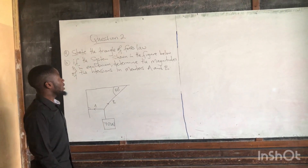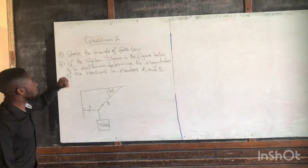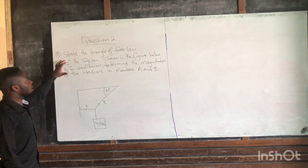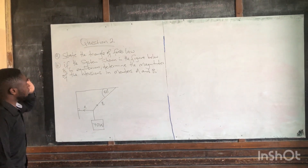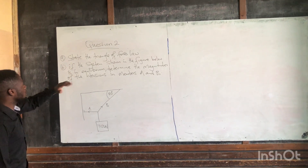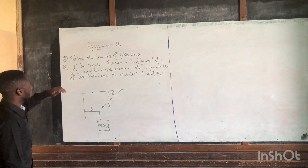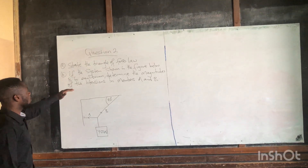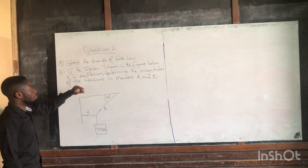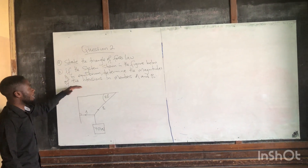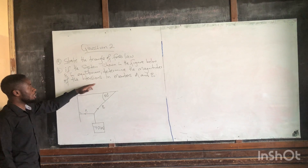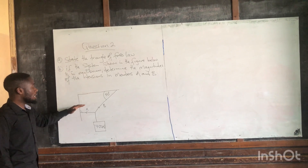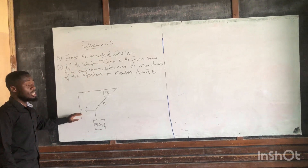So now I want to do question 2. The first question is: check the triangle of forces law. Number 3 — the system from the figure below is in equilibrium. Determine the magnitude of the members A and B.